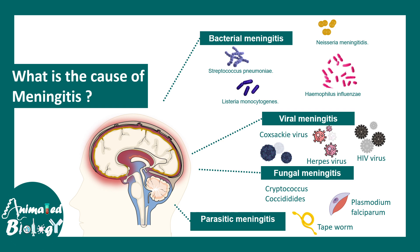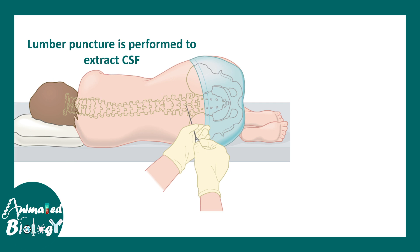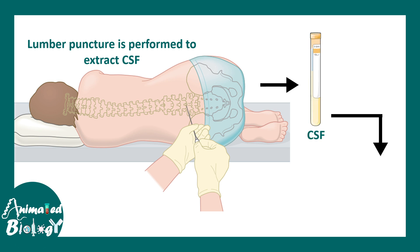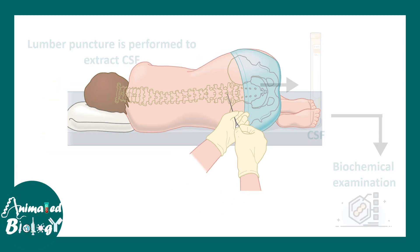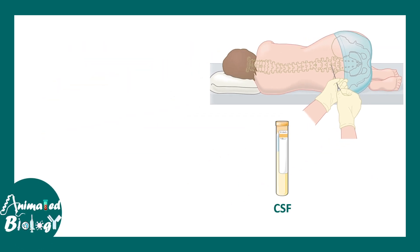The question is how does a clinician know what is the causal agent behind meningitis, because in each case there would be inflammation in the meninges. In order to determine this, a clinician would look at the CSF profile of the patient. After lumbar puncture, CSF is collected and tested for biochemical components. CSF profile is very important for understanding many diseases and their pathology.